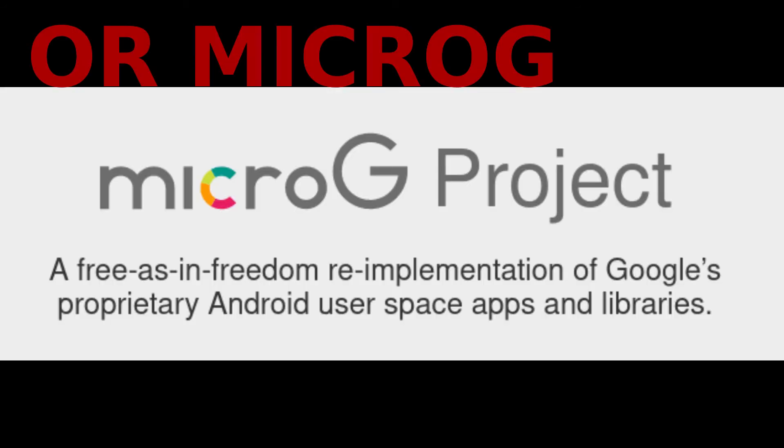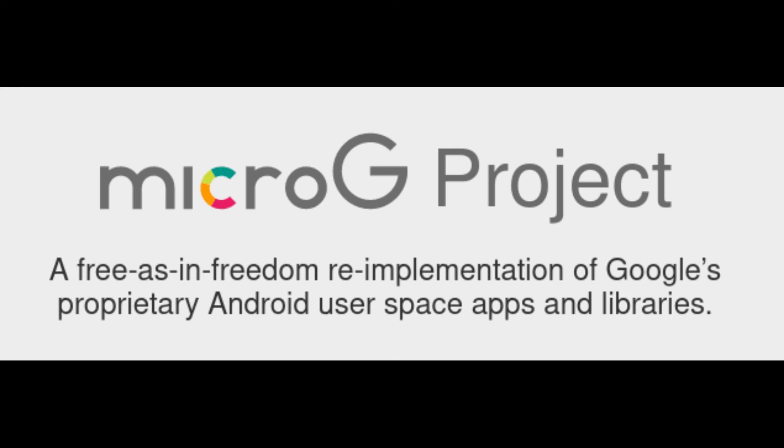Without microG installed, the features on certain apps may vary. For example, I don't have microG installed on my phone. This means that for Signal, it must always be running in the background to check for messages, as typically it would rely on Google push notification modules that get installed from Google Play Services. For me, I don't see too much of a battery issue keeping Signal running in the background, so I'm okay with it. You may notice that if Google services aren't installed, it could be a barrier to overcome with some apps.